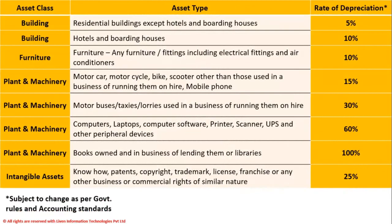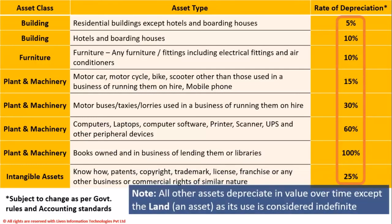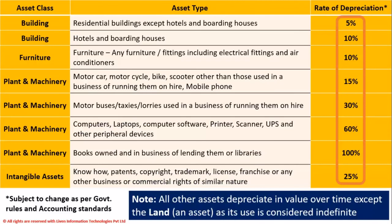Here we can see different types of assets on the left, and on the right are their effective depreciation rates for reference. These rates differ from country to country and are subject to changes as per government rules and accounting standards. It is important to note that all assets depreciate in value over time except land, as its use is considered indefinite.